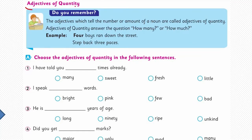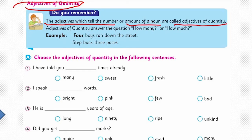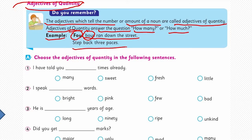Now let's move to adjectives of quantity. Quantity includes some, many, several, few — numbers can also come in here. We will express the quantity of a noun. The adjectives which tell the number or amount of a noun are called adjectives of quantity. Adjectives of quantity answer questions like 'how many' or 'how much.' For example: 'Four boys ran down the street' — boys is the noun and four is the quantity. 'Step back three paces' — three is the quantity here.